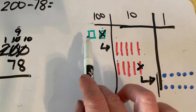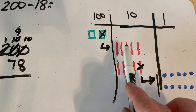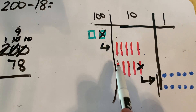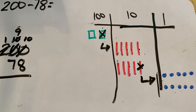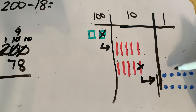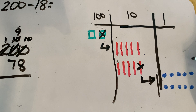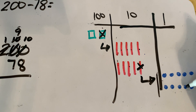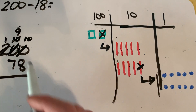Let's check it: one hundred, one ten, one twenty, one thirty, one forty, one fifty, one sixty, one seventy, one eighty, one ninety, one ninety-one, one ninety-two, one ninety-three, one ninety-four, one ninety-five, one ninety-six, one ninety-seven, one ninety-eight, one ninety-nine, two hundred. Now we can subtract.